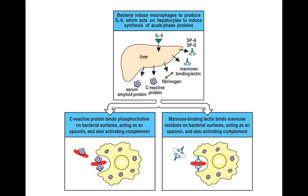MBL is going to act and function very much like C1Q to lead to the activation of C3 convertase and C5 convertase on the bacterial cell surface, eventually leading to the destruction of the bacteria. So both CRP and MBL, produced by the liver in the very early stages of your body being alerted to a microorganism trying to establish an infection, are very early protection mechanisms.